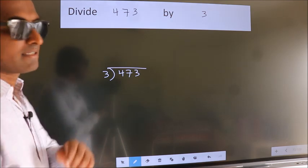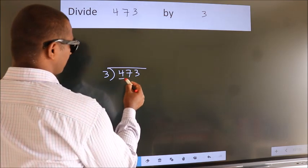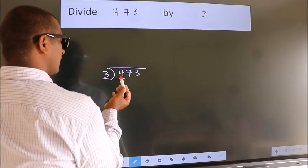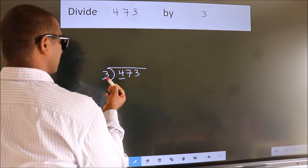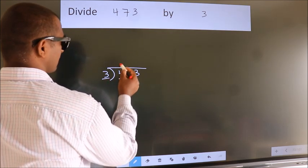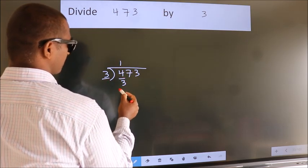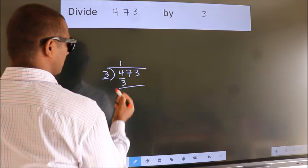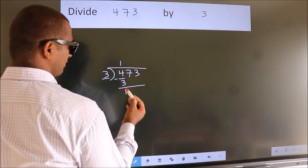Next, here we have 4, here 3. A number close to 4 in the 3 table is 3 1s, which is 3. Now we should subtract. We get 1.